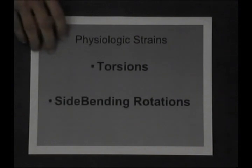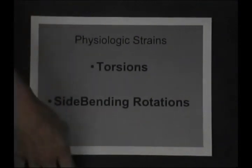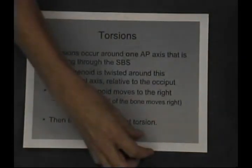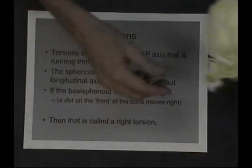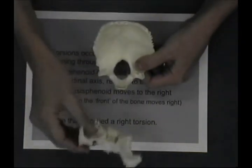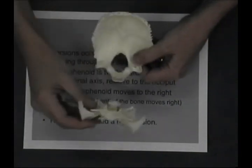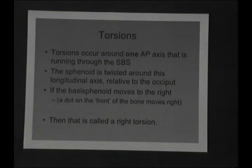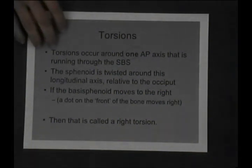First we will look at a torsion. Torsions occur around one AP axis running through the sphenoid and the occiput. What we find is that the sphenoid and the occiput are rotating in opposite directions around that AP axis.